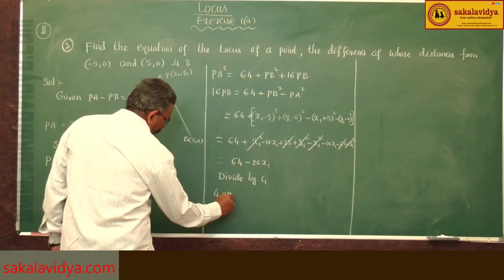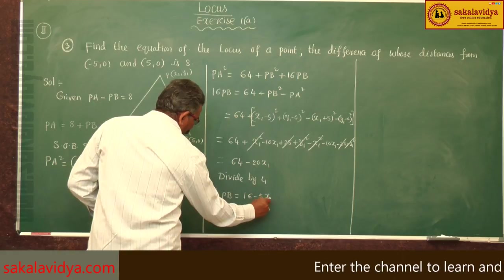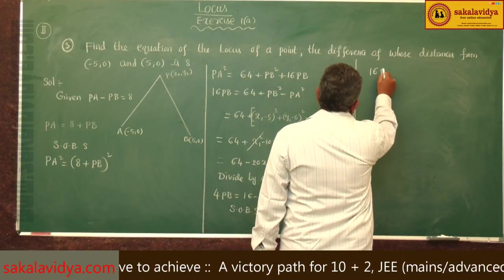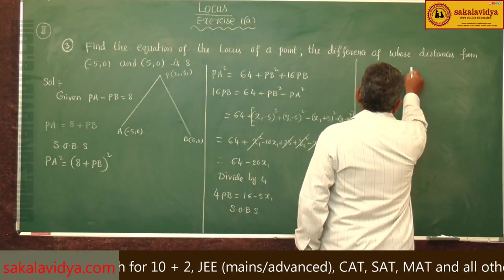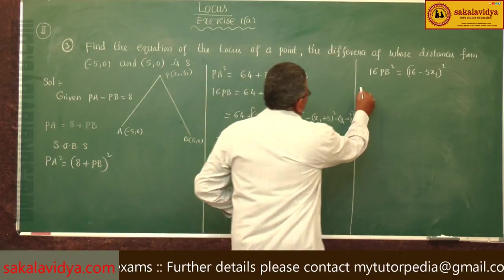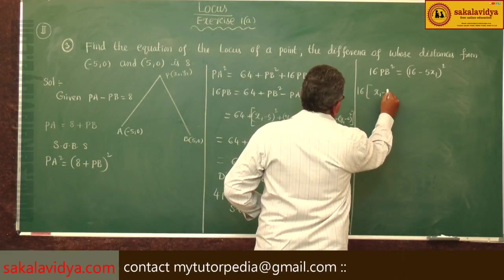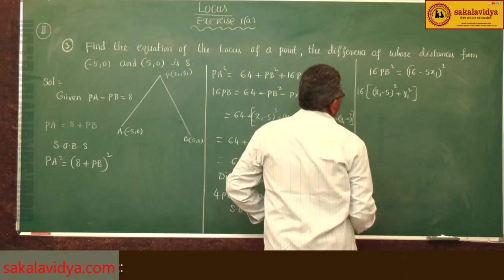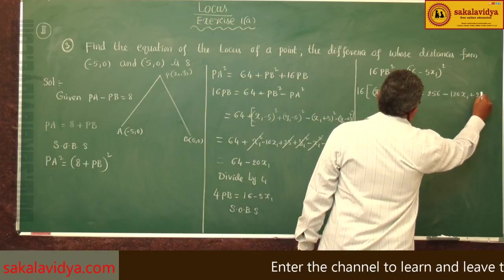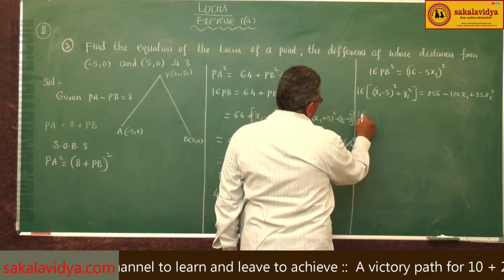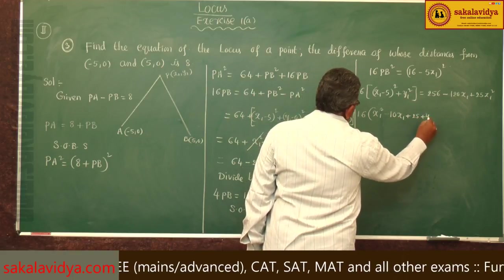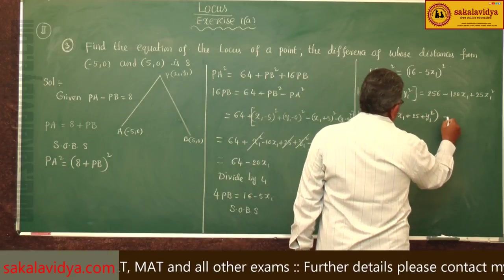We get 4·PB equals 16 minus 5x1. Squaring on both sides, 16·PB squared equals (16 minus 5x1) squared. We already know PB squared value. That is: 16 times (x1 minus 5) squared plus y1 squared.